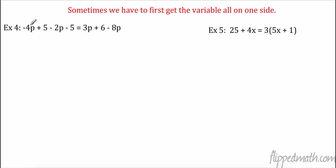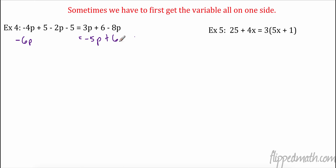Sometimes we first have to get all the variables on one side. If you check this equation, I have some p's over here and some p's over here. So the first thing I'm going to do is combine like terms. Negative 4p minus 2p is negative 6p. 5 minus 5 is 0. That equals 3p minus 8p, which is negative 5p, plus 6.